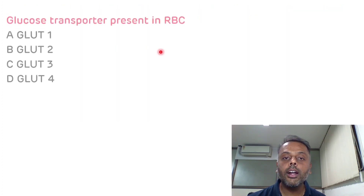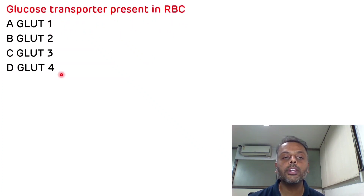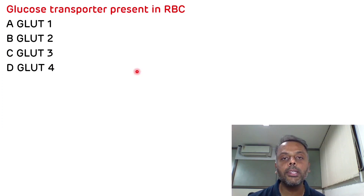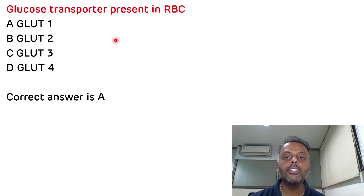The third and last question is: which glucose transporter is present in red blood cells? The glucose transporter present in RBCs is GLUT1. The correct answer is 1. That is all about today's video on glucose transporters.